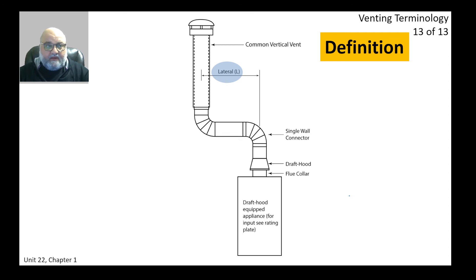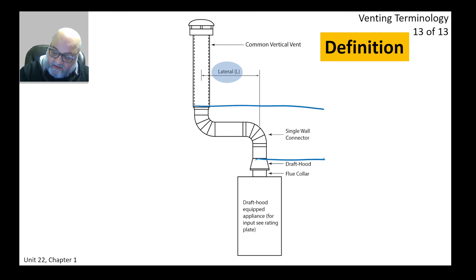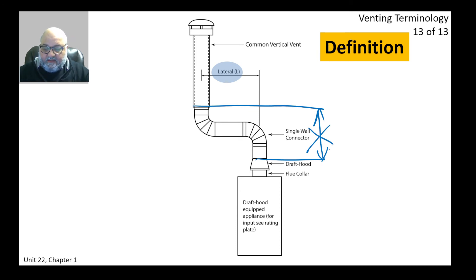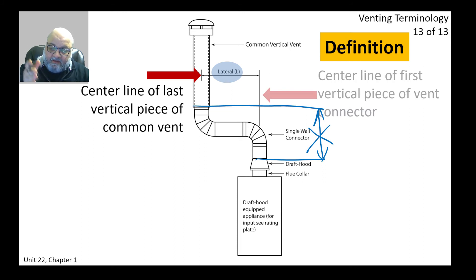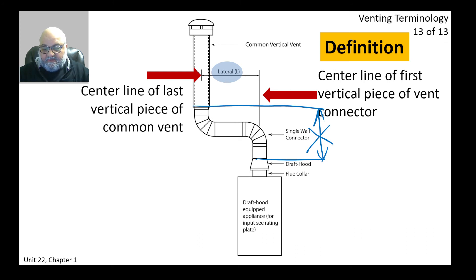For a single appliance there is no rise — we don't discuss rise for a single appliance. Instead, we talk about the lateral distance: the distance between the centerline of the last vertical piece of common vent and the centerline of the first vertical piece of vent connector. That lateral distance is very important for single-appliance applications.